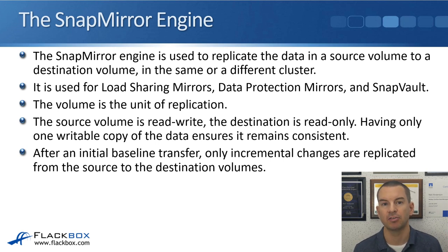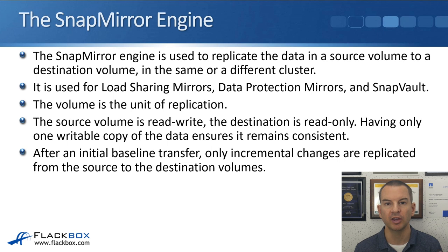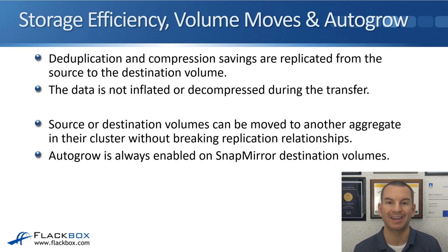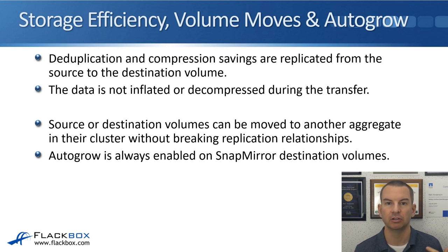After an initial baseline transfer, only incremental changes are replicated from the source to the destination volumes, so this keeps things as efficient as possible. Deduplication and compression savings are replicated from the source to the destination volume. The data is not inflated or decompressed during the transfer, so you keep those storage efficiency savings on both sides.